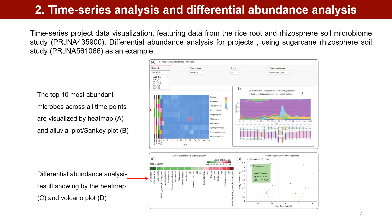Time series analysis and differential abundance analysis: the top 10 most abundant microbes across all time points are visualized by heatmap (a) and alluvial/Sankey plot (b). The differentially abundant microbes at genus level between sweet and bitter sugar canes are displayed in a heatmap (c) and a volcano plot (d).